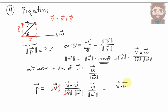The vector P is equal to V dot W divided by the length of W squared times the vector W. And that's called the projection of the vector V onto W. It's the amount of V pointing in the direction of W.